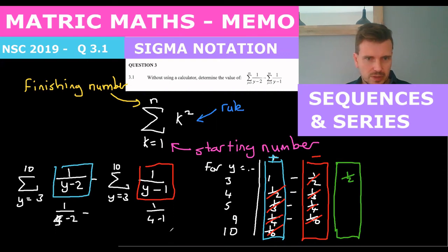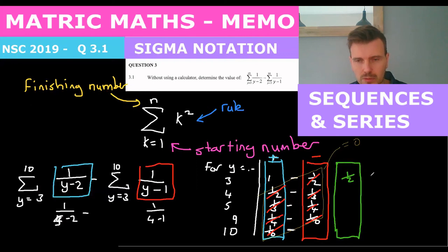So this bit here, these all cancel to 0. These all sum to 0. 1 over 9. And so we have 1 minus 1 over 9. So 1 minus 1 over 9 is equal to 8 over 9. So that would be the final answer for question 3.1.